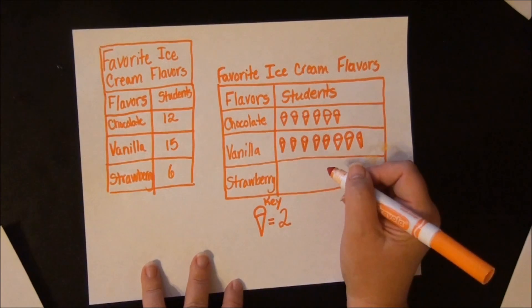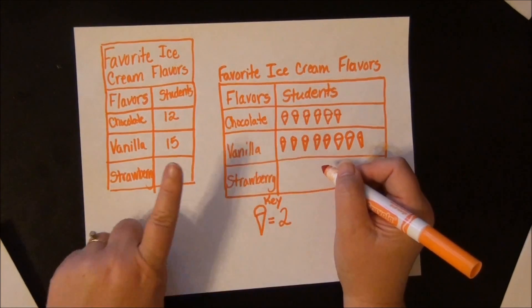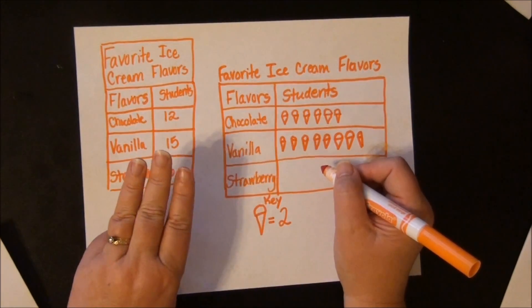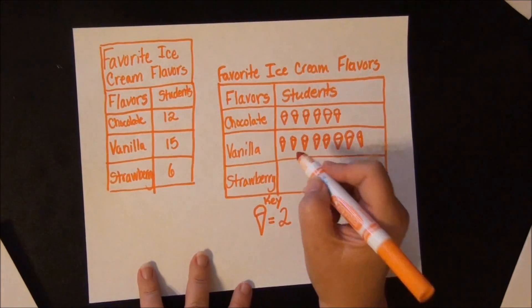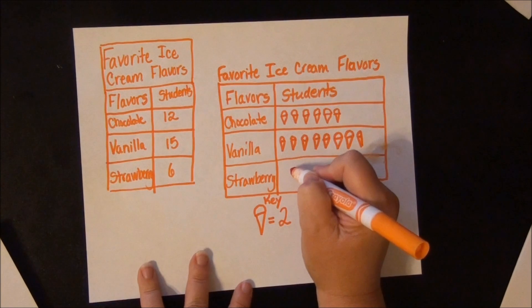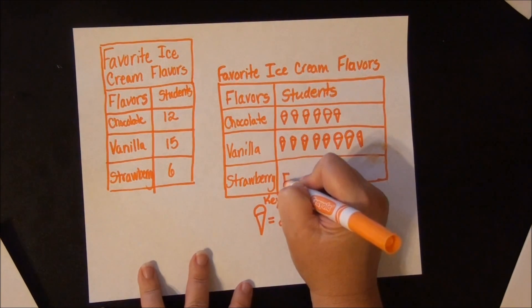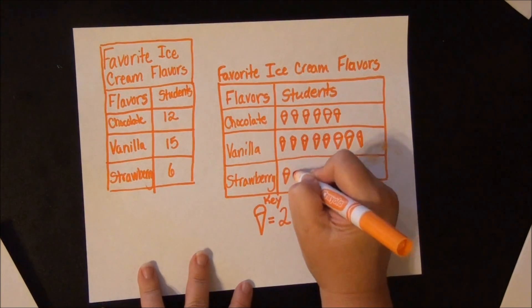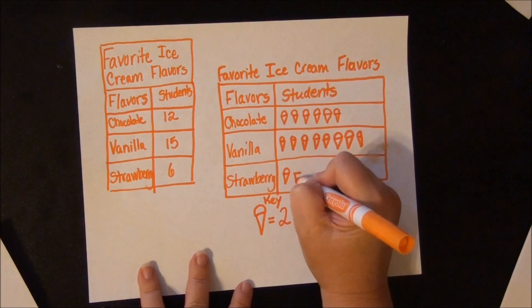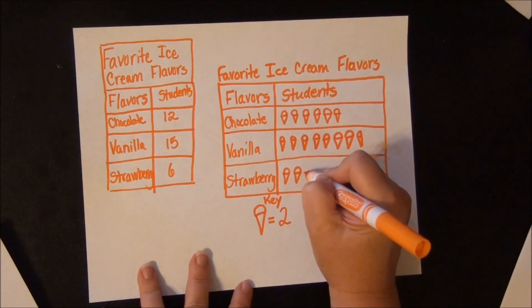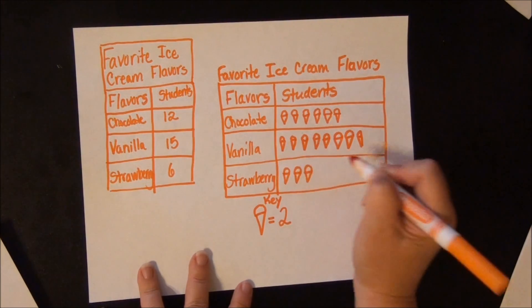Then 6 strawberries: 2, 4, 6. So that means we need 3 cones drawn: 1, 2, 3 — that gives us 6.